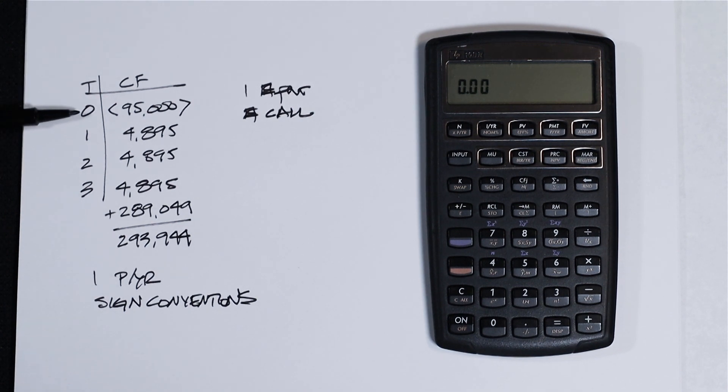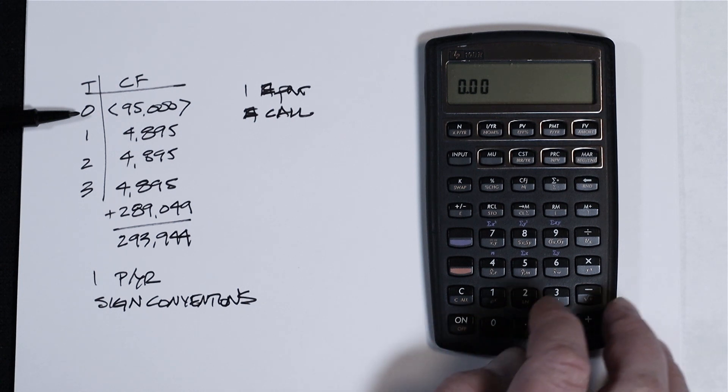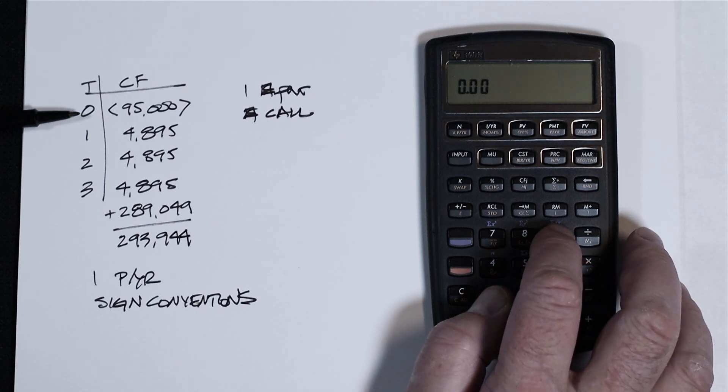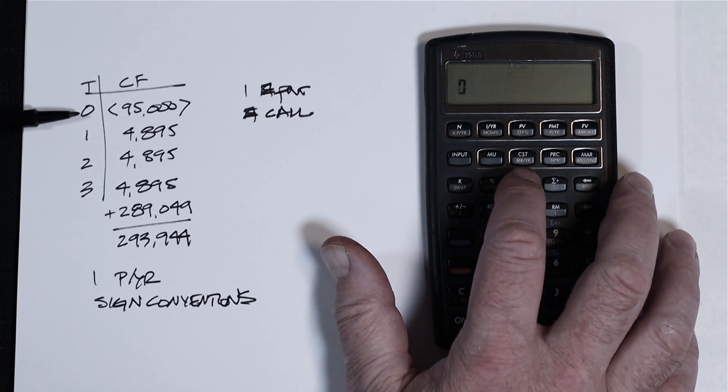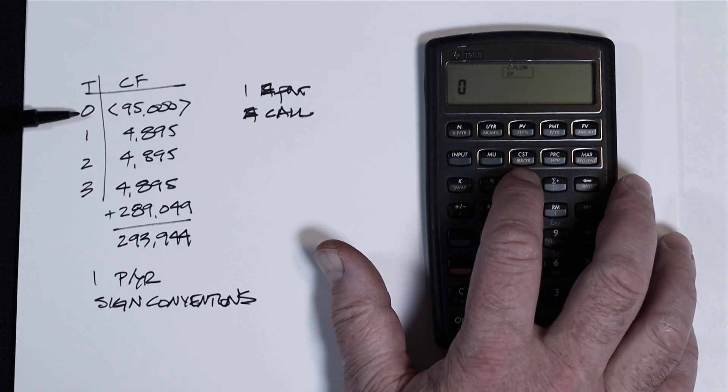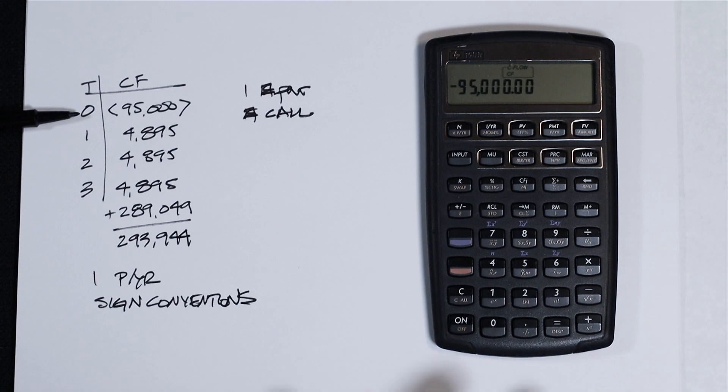So the first flow at time period zero is negative $95,000, $95,000 plus or minus, and just press CFJ, and it'll tell you it's the cash flow at time period zero, and then release it.